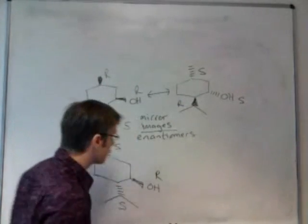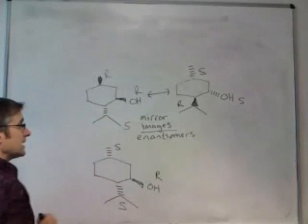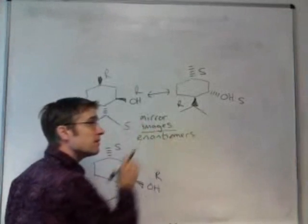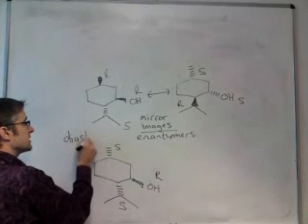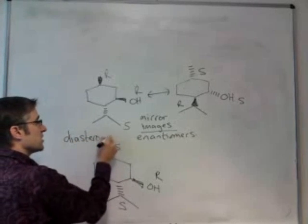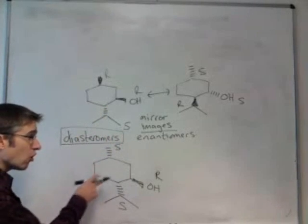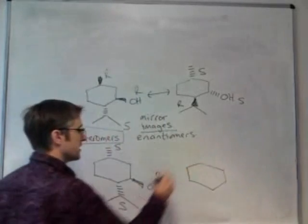Now this is not a mirror image of this or a mirror image of this. We've only changed one of the chiral centres, not all of them. So the relationship between these molecules is that they are stereoisomers of one another, but not mirror images. And we refer to these compounds as diastereomers or diastereoisomers.